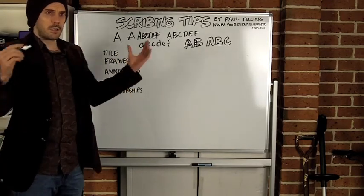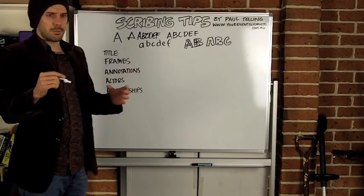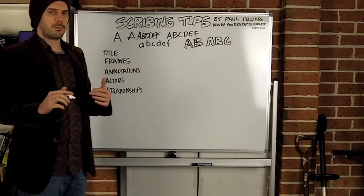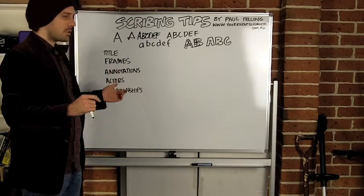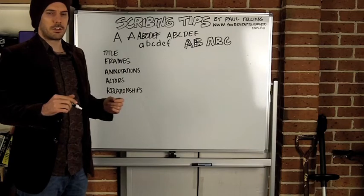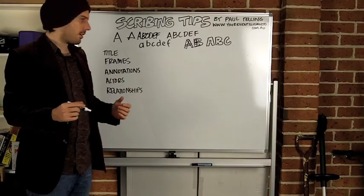Annotations, so yeah it's great to draw a whole bunch of blobs and pictures and triangles but what do each one of those triangles mean and then what do each of those frames mean. So annotations are literally adding text to your diagram to give it more clarity.